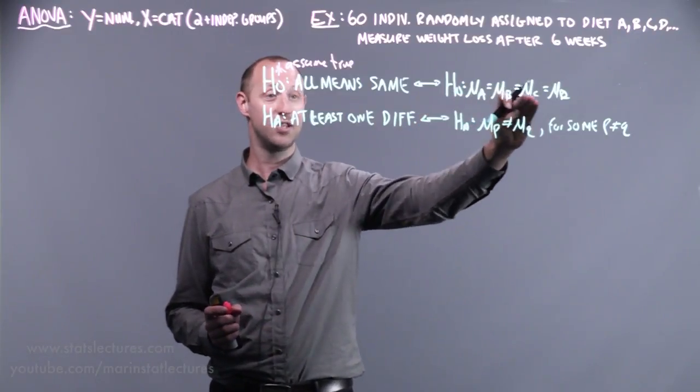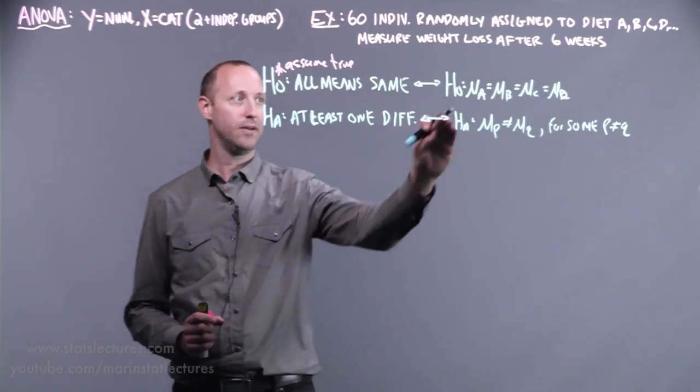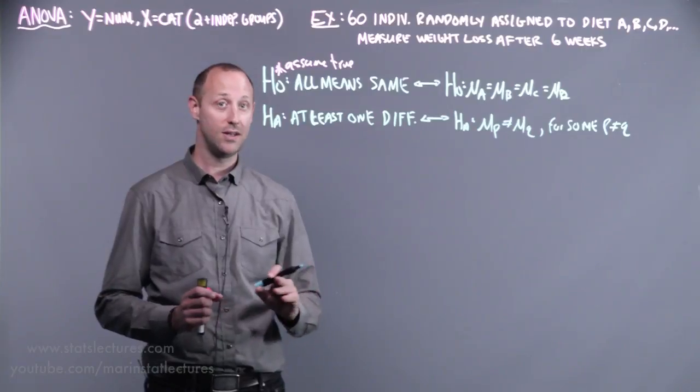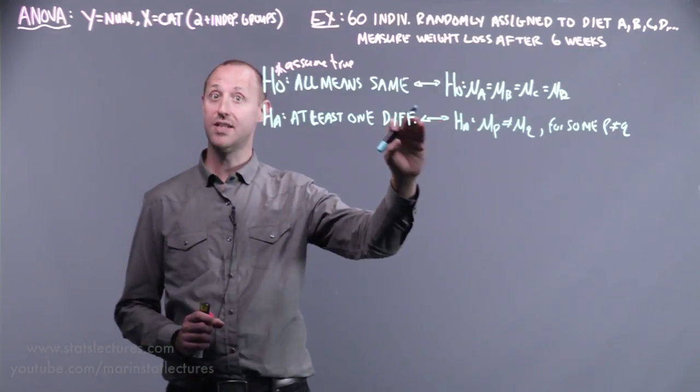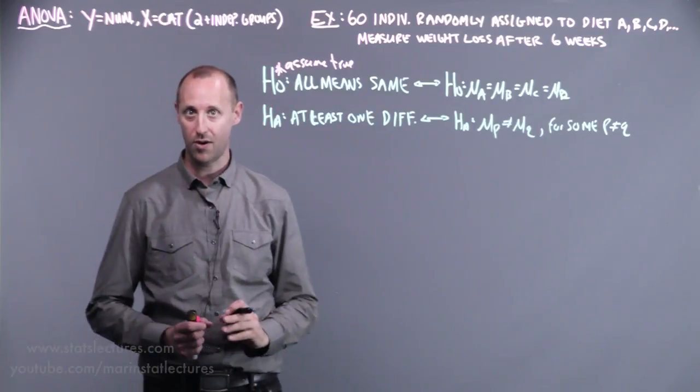If at the population level the mean weight loss is the same for all these diets, we expect the sample means for all these four groups to be approximately the same. Then we can test how likely we were to see the differences we saw, or even larger, if we'd expect them to be all the same. Hypothesis tests always have the same underlying approach.